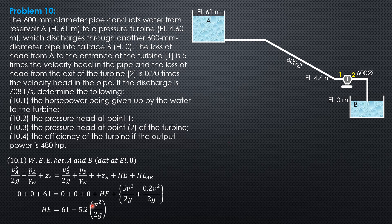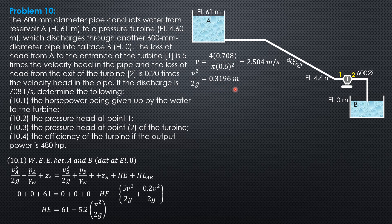We compute the velocity as 4Q over π times diameter squared: 4 times 0.708 over π times 0.6 squared. Velocity is 2.504 meters per second, and the velocity head is v² divided by 2g = 0.3196 meters. Substituting, the head extracted by the turbine is 61 minus 5.2 times 0.3196, giving a head extracted of 59.34 meters.